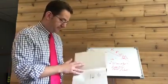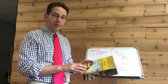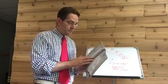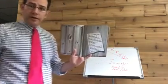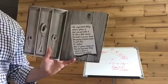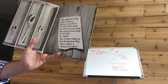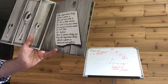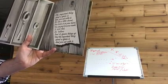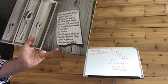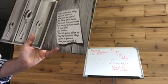The Important Book. This is from the same author as Good Night Moon, Margaret Wise Brown. The important thing about a spoon is that you eat with it. It's like a little shovel. You hold it in your hand, you can put it in your mouth. It isn't flat, it's hollow. And it spoons things up. But the important thing about a spoon is that you eat with it.